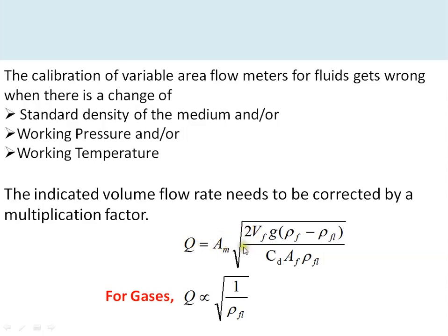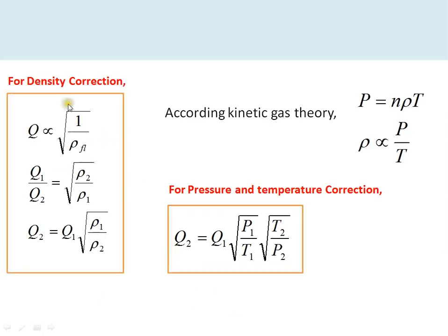For gases, the volumetric flow rate Q is proportional to the square root of [1 / ρ_fluid], because the gas density is very small compared to the float density, so the float density term in the numerator dominates and the fluid density in the numerator can be omitted. For a density correction, the equation becomes: Q_actual = Q_indicated × √(ρ_1 / ρ_2), where ρ_1 and ρ_2 are the two gas densities.